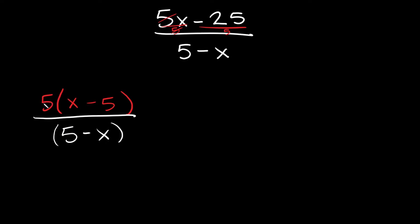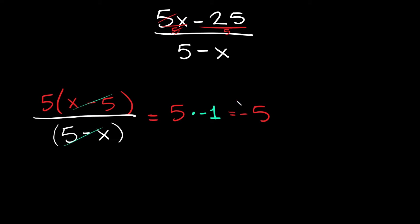Now that we've factored the top and bottom as much as possible, we can see we have opposite factors: x minus 5 and 5 minus x. That simply reduces to negative 1. We still have the 5 up top, so 5 times negative 1 equals negative 5. That's your answer — negative 5.